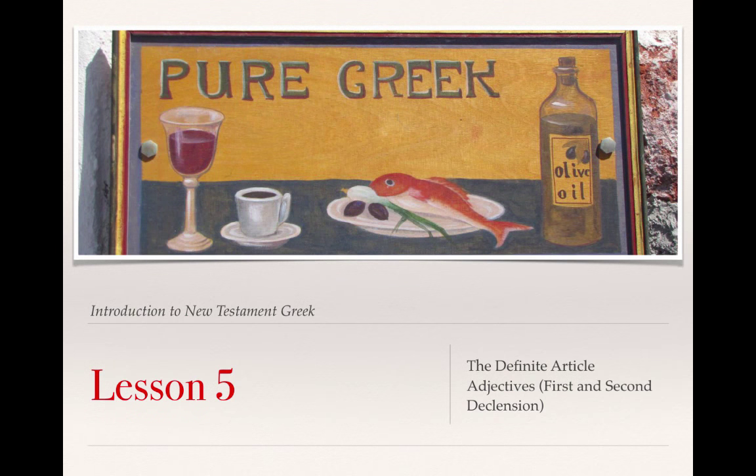This is our fifth video lecture on Lesson 5 from Clayton Croy's A Primer to Biblical Greek. In this lecture, we will discuss the definite article and adjectives of the first and second declension.